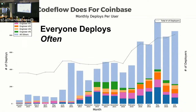What has CodeFlow actually done for Coinbase? Everyone deploys, and often. At the bottom left you can see when we were on Heroku — deploys done by one or two people infrequently. As we scaled, had more engineers, we get more projects, more deploys, more engineers, and it's going up and to the right. If you look, the majority of people deploying are not three or four tech leads or engineering managers — they're the people actually building features and testing them in production.